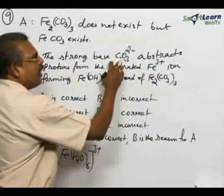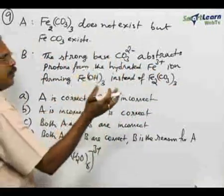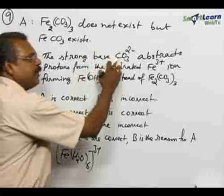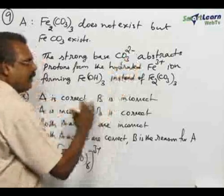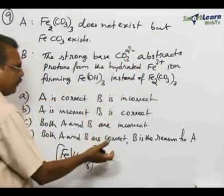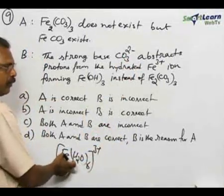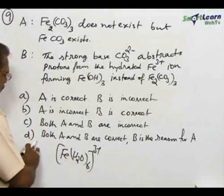The carbonate, you know very well, carbonic acid is a weak acid. Therefore, its conjugate base must be very strong. Since carbonate ion is a stronger base, that can easily abstract protons from hydrated ferric ion. That is what happens. Therefore, the answer must be D.